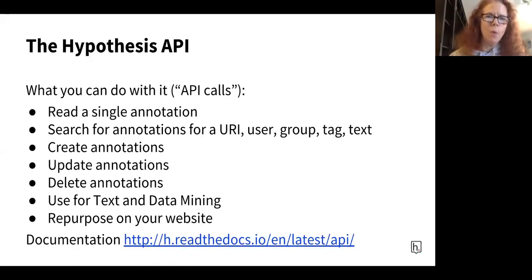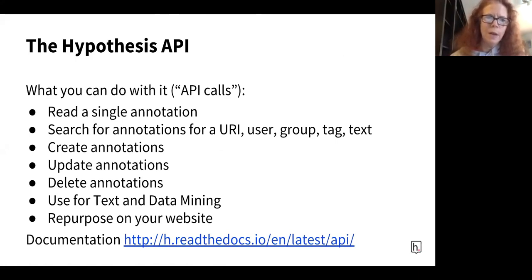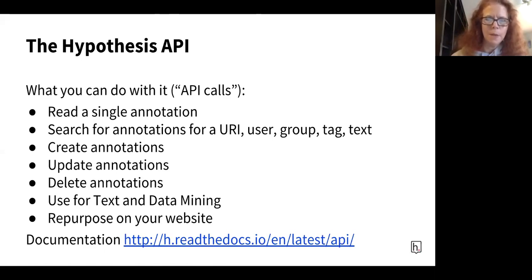We also have a very robust API that you can get started with today. There are a number of things you can do with the API. We believe strongly that users should be able to get their annotations out and that publishers and other entities should be able to make use of them readily — whether they want to repurpose them on their website in a widget for marketing purposes or use them for text and data mining. Nate is going to be including some links to our documentation, and if you have questions we're happy to answer those today as well.